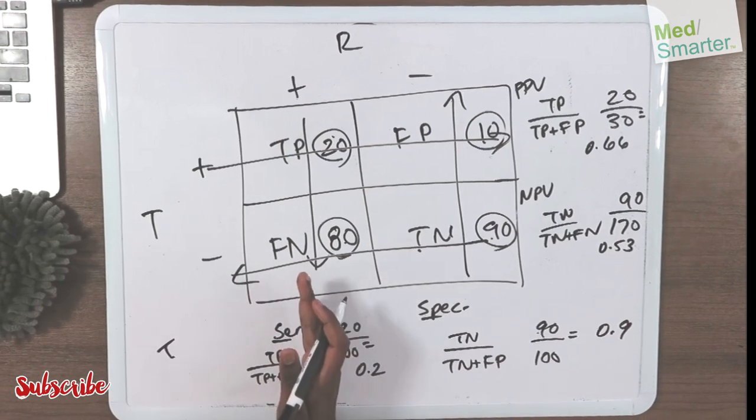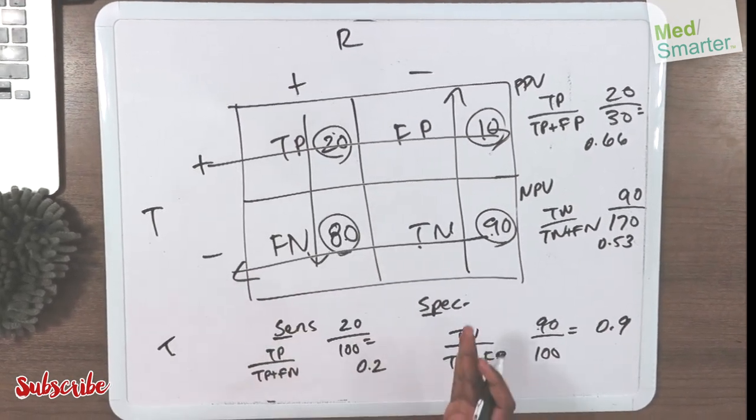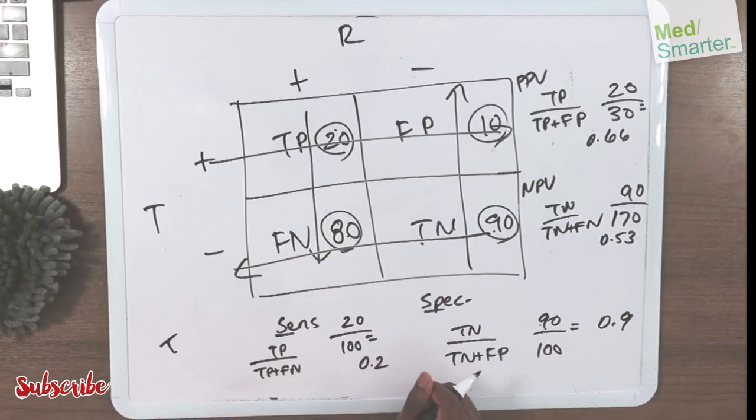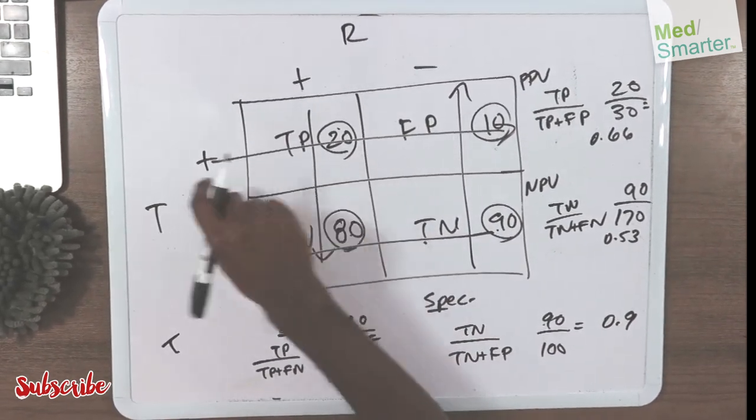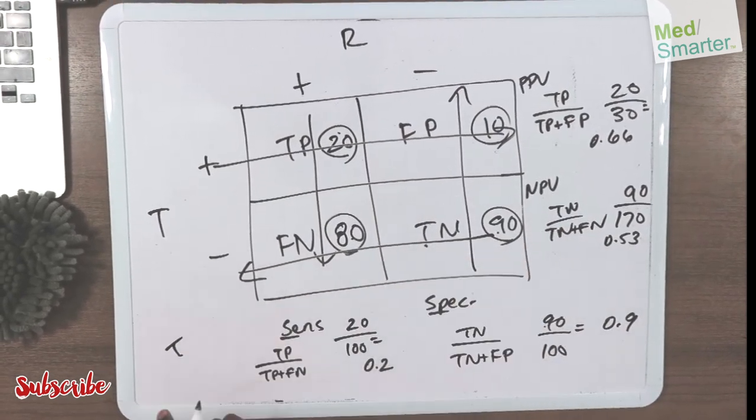So that is your sensitivity coming straight down, start with the trues. Your specificity going straight up, start with your true. Then your positive predictive value, start with the true straight across. Negative predictive value, start with the true straight horizontal.